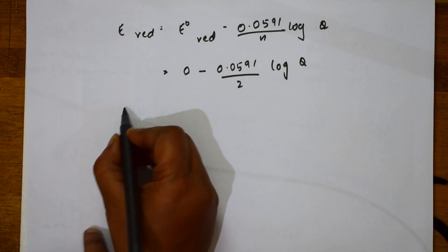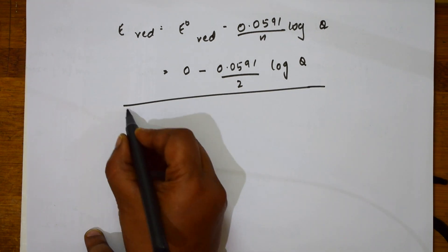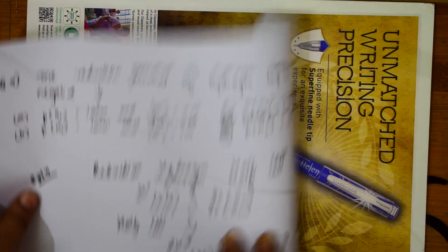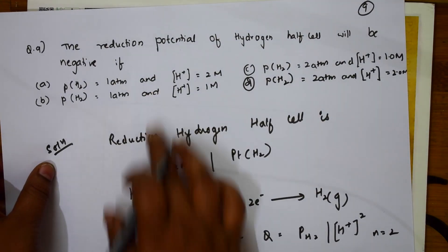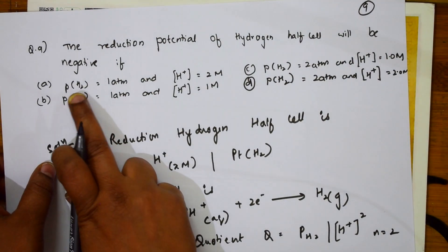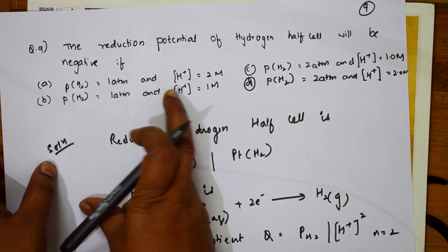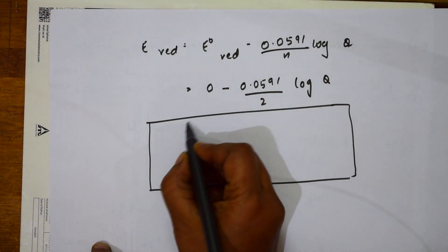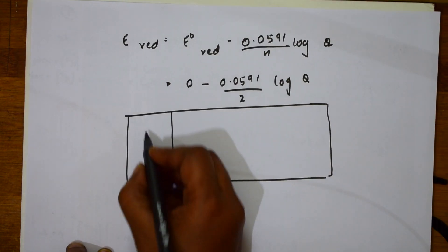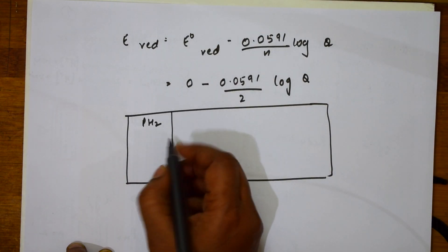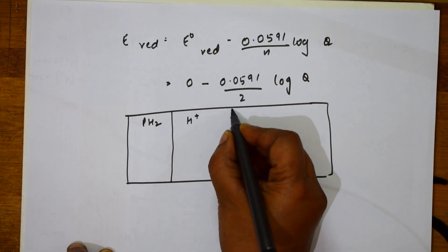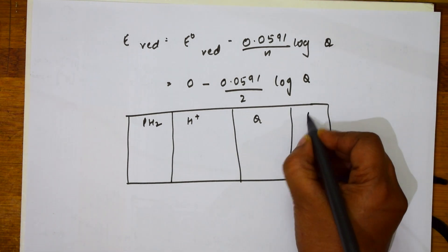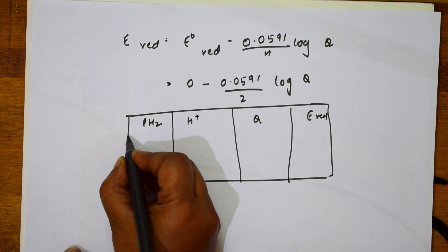Now, let us tabulate one thing with the data which is given to me. What do they give me according to the data? I will try to note. What is the first one here? PH2 is 1 atmosphere, H+ concentration is 2 molar. I will make a tabular column. What do they give me here? They have given me PH2. This is H+, Q value, and the next one is E reduction.